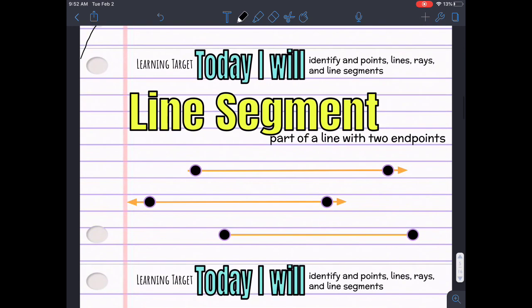A line segment is just part of a line with two end points. So, it has two end points. It's a segment. So, right here, you can see I have my arrows, right?